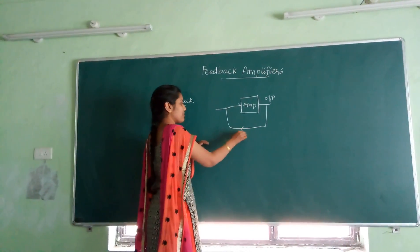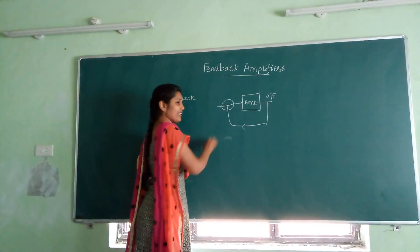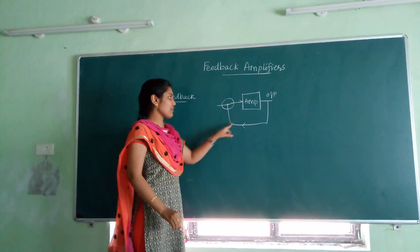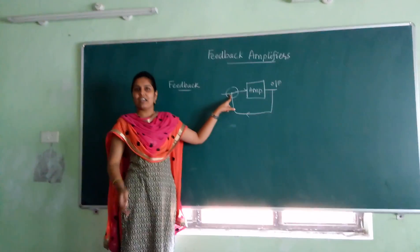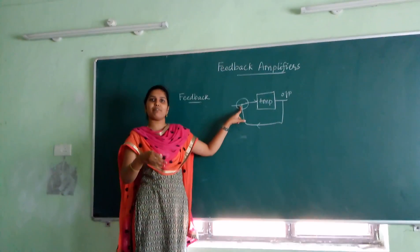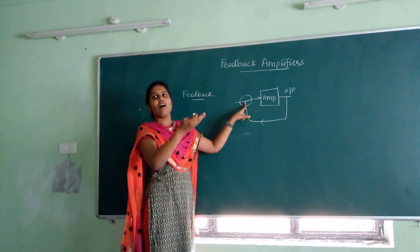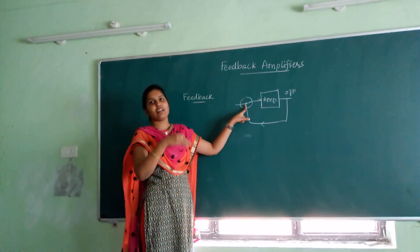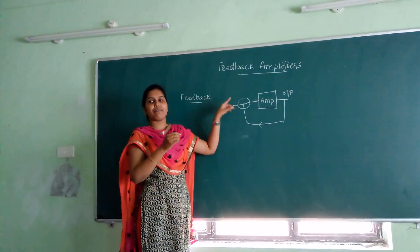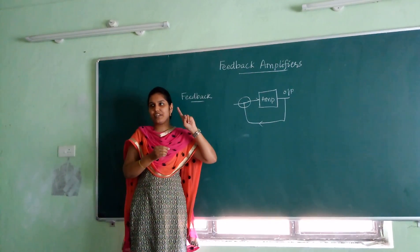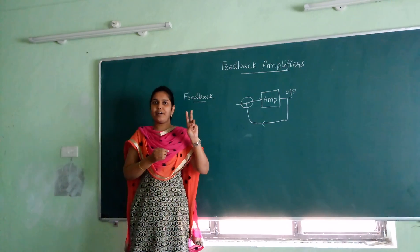This process is called as feedback. In this process of injection of the output to the input, the injection may be adding to the input of the amplifier or else it may be opposing the input of the amplifier. So in that case, we find two kinds of feedback: the first one is positive feedback and the second one is negative feedback.